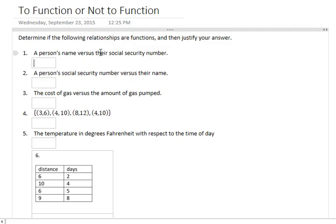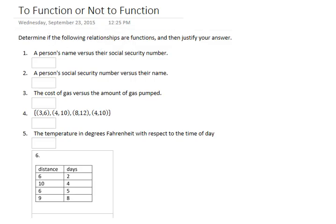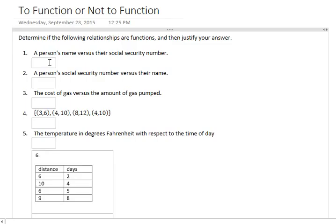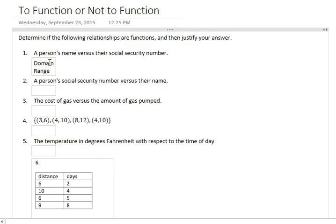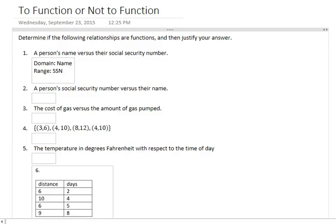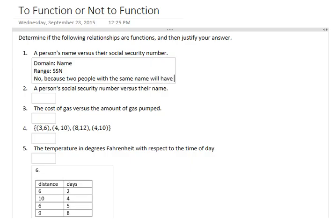Our first one: a person's name versus their social security number. When I see the word 'versus', I interpret it as domain and range. In this case, my domain is the name and the range is the social security number. If we have a name, does it go with exactly one social security number? I'm going to say no, because two people with the same name will have two different social security numbers. This cannot represent a function.